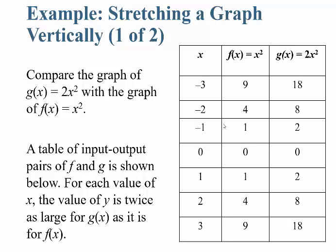For example, when x is equal to negative 3, negative 3 squared into f of x gets you 9. But negative 3 into g of x gives you negative 3 squared is 9 times 2 is 18. The table shows values for negative 2, negative 1, 0, 1, 2, and 3, and in each case the values of g of x are twice as large.